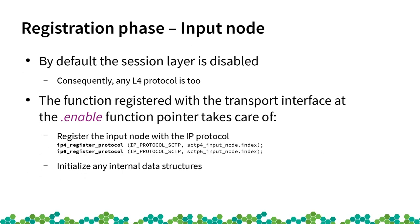On the other side, we're taking care of the output nodes. There is also an input node dealing with incoming packets. By default in VPP, the session layer — which is the layer taking care of your transports — is disabled, meaning VPP doesn't deal with things happening at L4. To turn it on, there is an enable function pointer which needs to be implemented and which registers your new protocol with the IP4 layer, done by calling ip4_register_protocol or ip6_register_protocol, passing in your protocol number and the index of your input node.